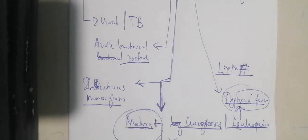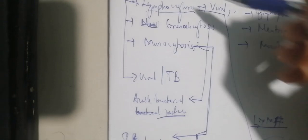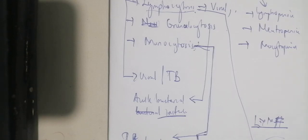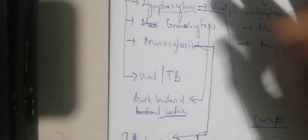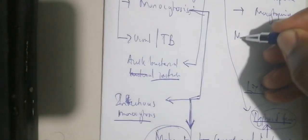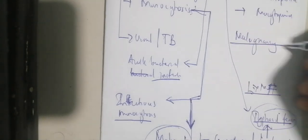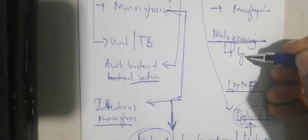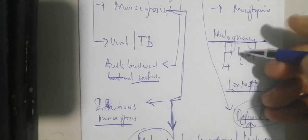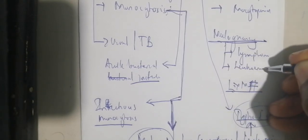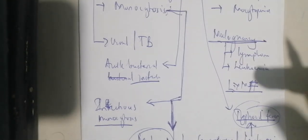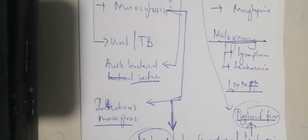If you have extreme leukocytosis — more than 100,000 — with a lymphocytic predominance, you can think of malignancies. Particularly with excessive lymphocytosis, you think of lymphoma or leukemia. Those are the two major malignancies to consider when you have extreme leukocytosis with lymphocytic predominance.